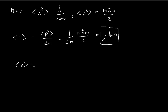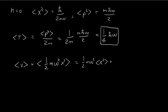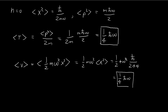Now we do the same thing for potential energy. The potential for the harmonic oscillator is given by the standard expression, and since the prefactor terms are constants, we can pull them out. This leaves those constants multiplied by the expected value of x². Substituting the result derived earlier, and cancelling terms, we get ¼ ℏω for the expected potential energy.